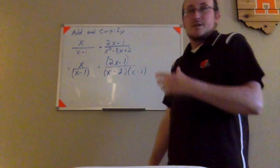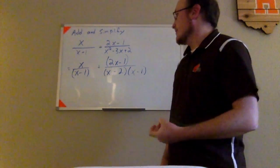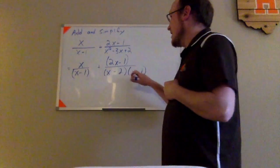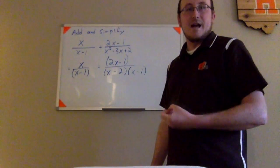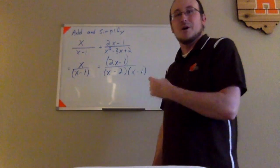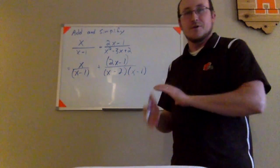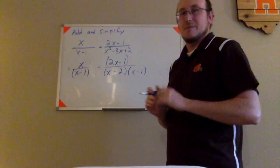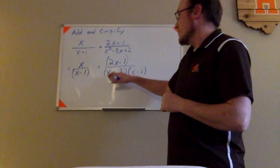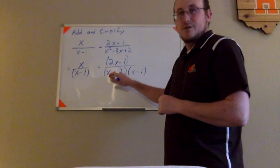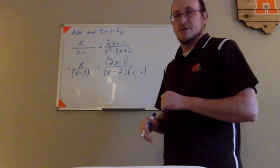Now that I have my denominators in their factored form, I can look at both denominators here and see that they already have the factor of x minus 1 in common. That's good news. I don't have to do anything to make them have that in common. But they do not both have a factor of x minus 2. This one does, this one does not.